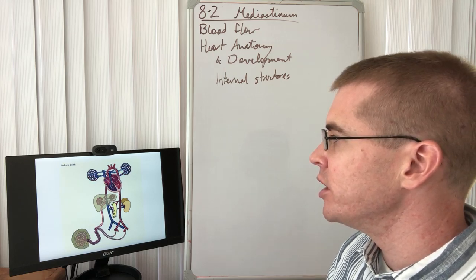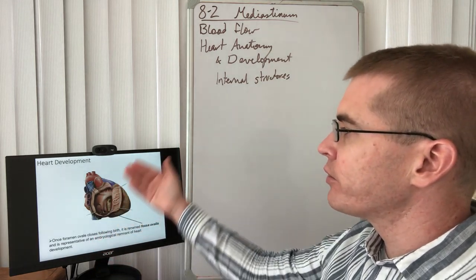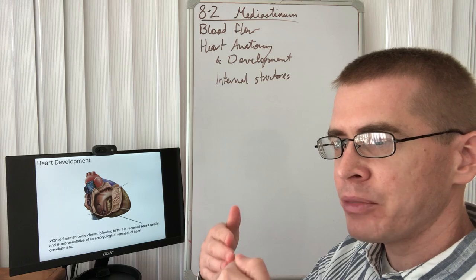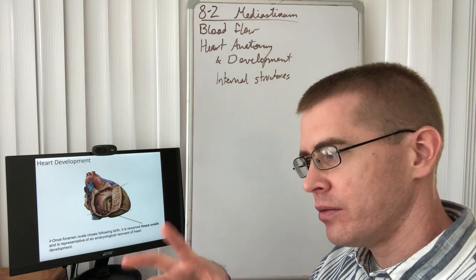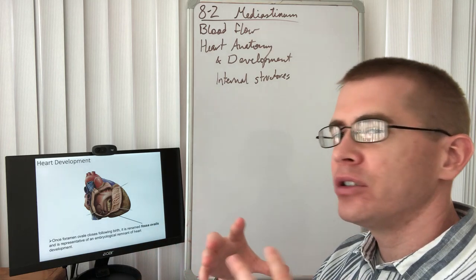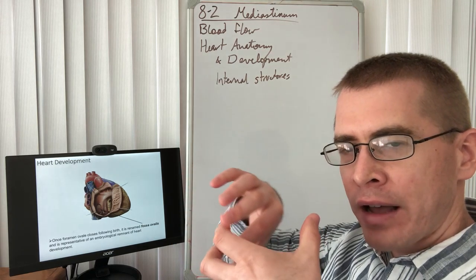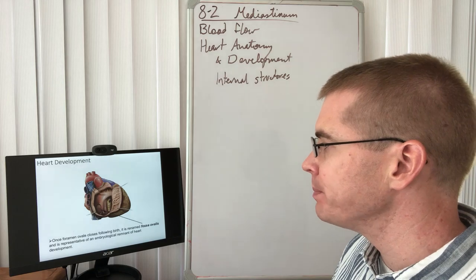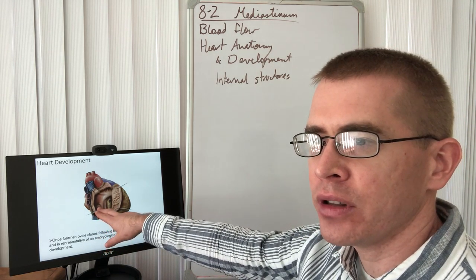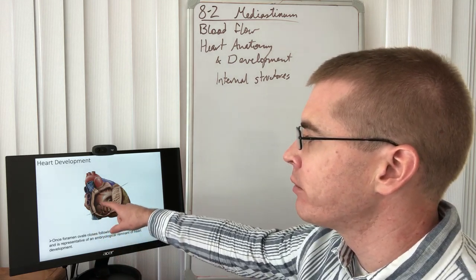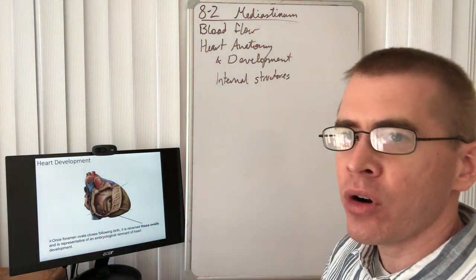So back to the in utero condition. So the thing is that during development, the different cushions, the septums that form between the chambers of the heart have to develop. The heart develops as one large chamber, curves around in on itself, and these septa begin to form. The way that blood passes from the right atrium to the left atrium in utero is from a foramen between those atria in this septum called the foramen ovale of the heart.